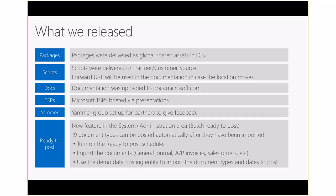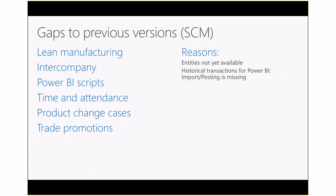We also created an entity that imports directly into the Ready to Post form. If you imported free text invoices, general journals, fixed asset transactions, and so on, they need to be posted. So there's an entity that reads a spreadsheet specifying what to post, fills in the UI, and the batch scheduler picks it up and executes batches in the batch framework. You can also use this for non-demo data — any data that you want posted automatically.